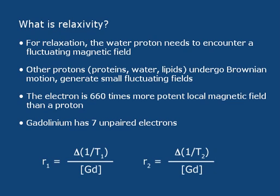And then we talk about relaxivity, which we define as a lowercase r. This is just a change in the relaxation rate that we observe — 1 over T1 — and then we normalize this to the concentration of gadolinium. So a higher relaxivity is something that's going to give a bigger T1 change.